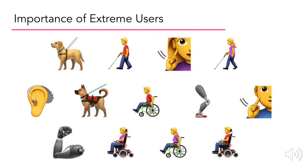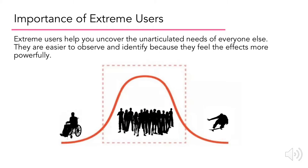Color blindness is just one type of impairment that actually has several severity levels and subtypes of its own. There are many types of impairments that someone might have, and even though the majority of people are reported to not have any type of impairment, by solving accessibility issues for extreme users — meaning those who fall on either end, from having significant impairments to having zero impairments — we actually solve a lot of problems for those in the middle of the curve, which represents the majority of the population.